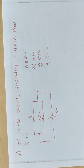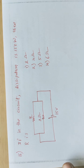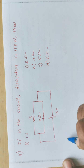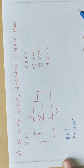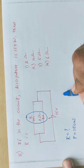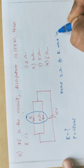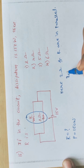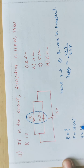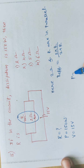Problem 6 - the last problem. If dissipation in the circuit is 150 watts, find R. Power equals 150 watts. In the circuit, 2 ohms and R are in parallel. Effective resistance equals 2 into R divided by 2 plus R. Voltage V equals 15 volts is observed in the diagram.